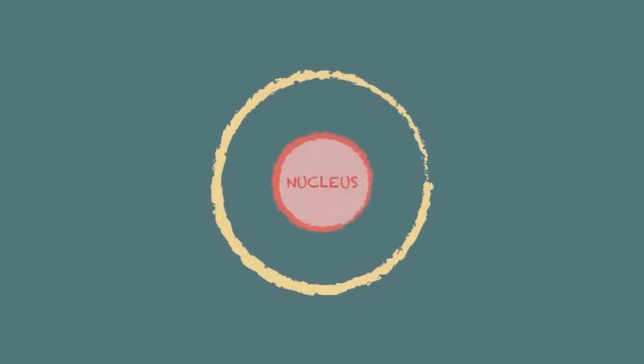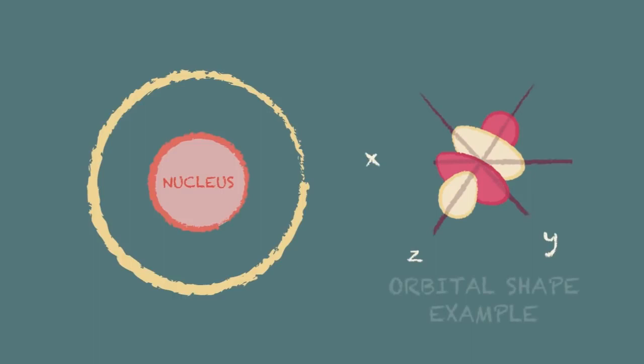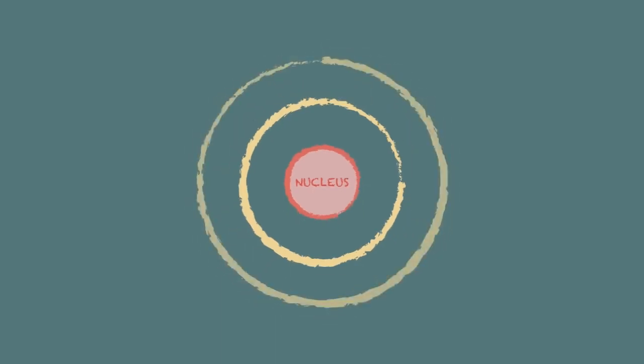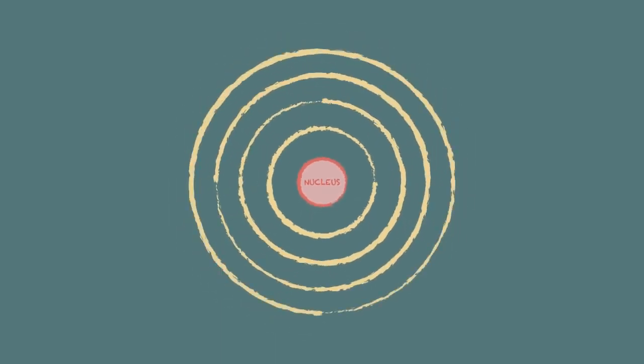Electrons are arranged in energy levels or shells around the nucleus of an atom. The actual orbit shapes are a bit too complicated to cover in such a short lesson but on average the orbital radius increases as the energy levels increase.